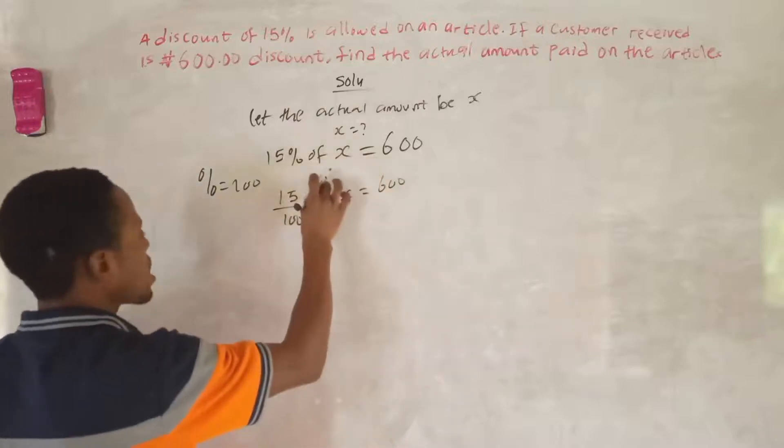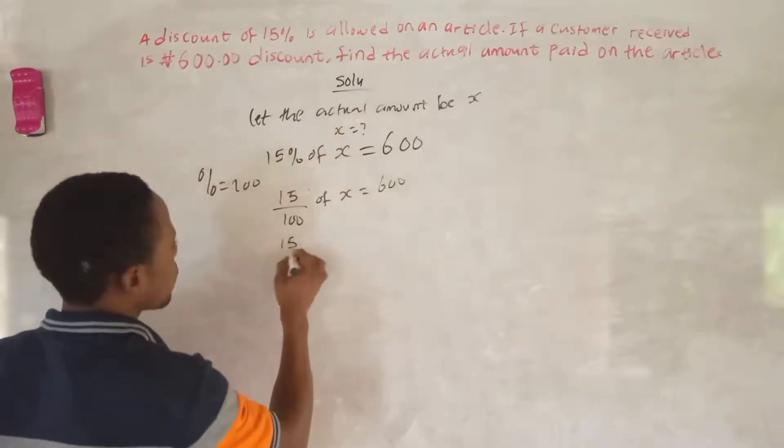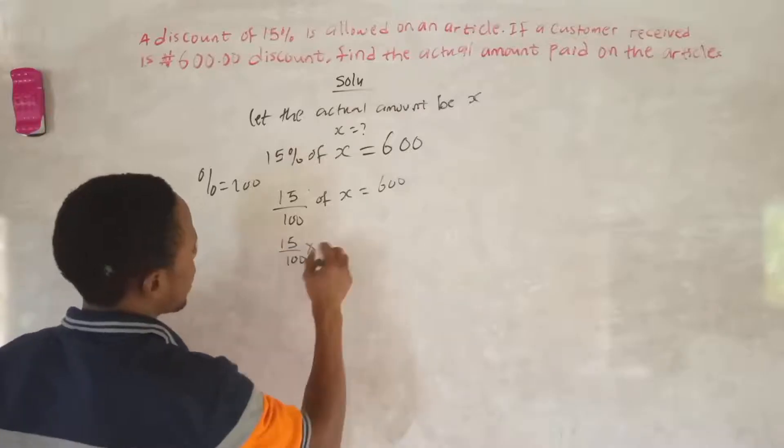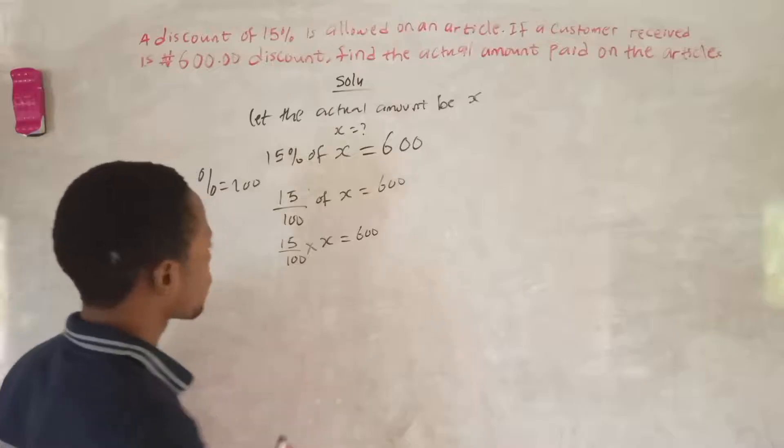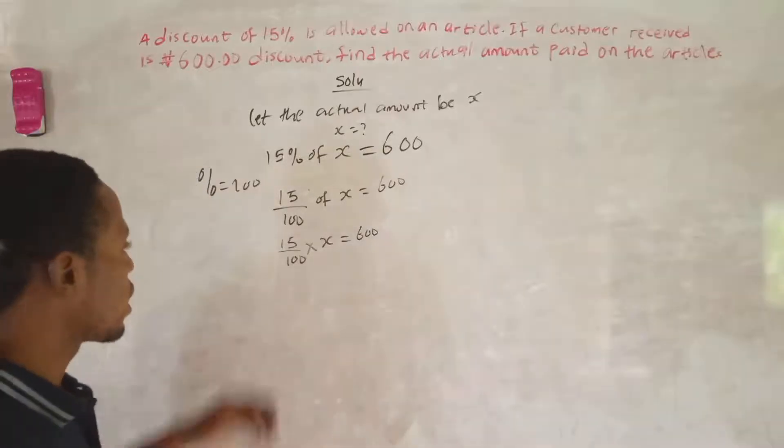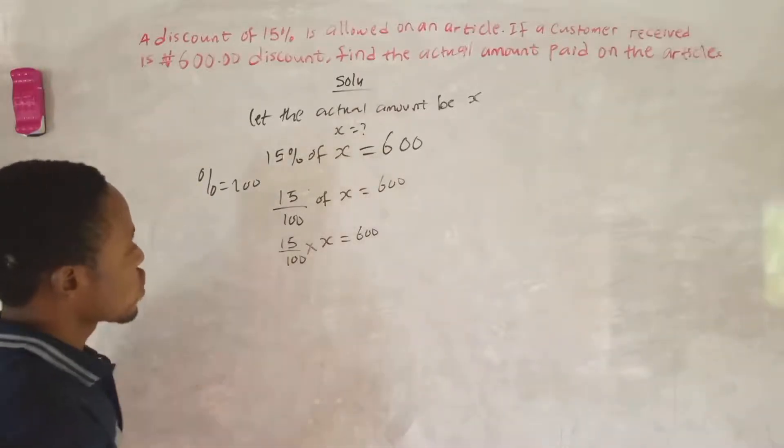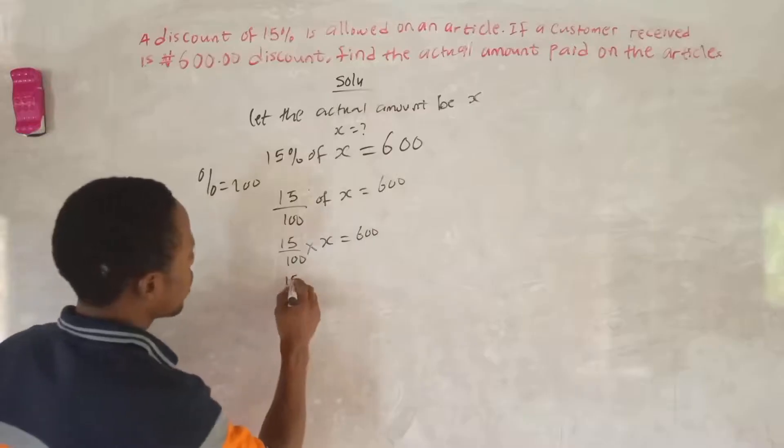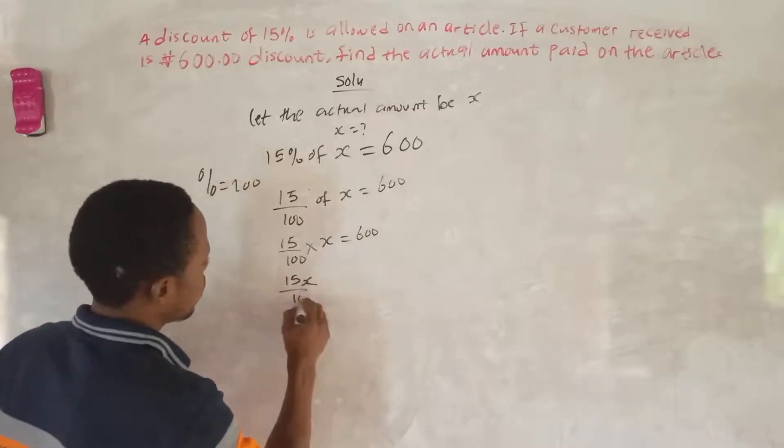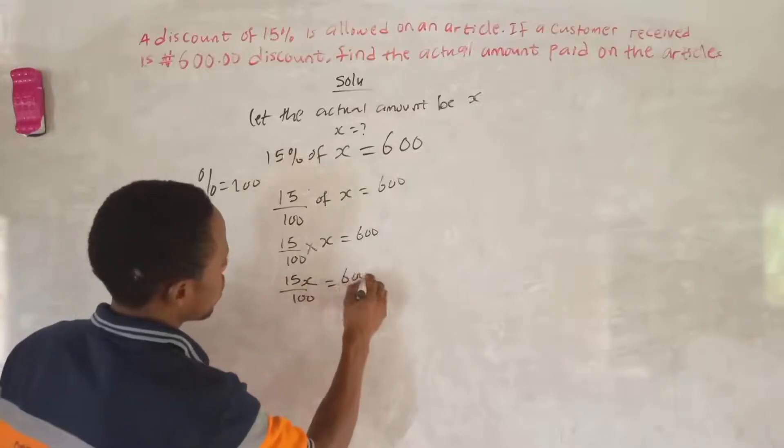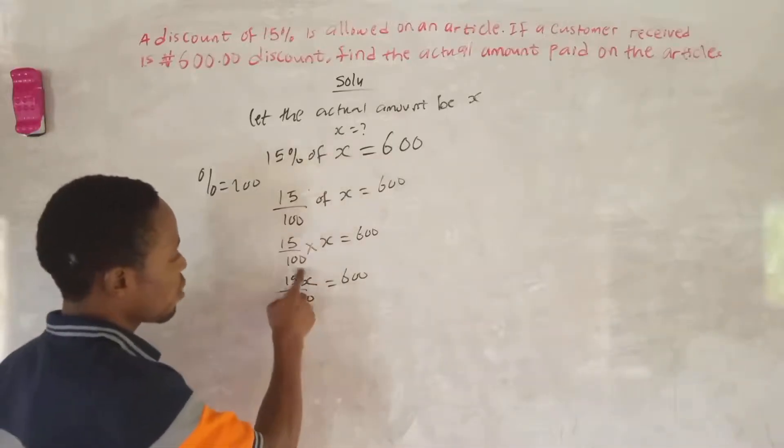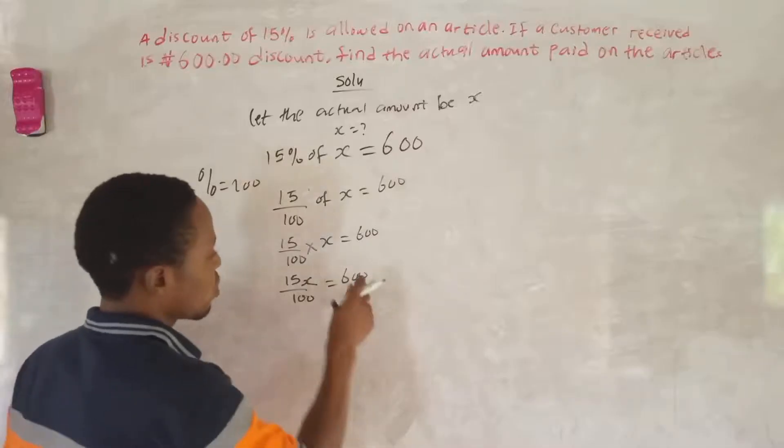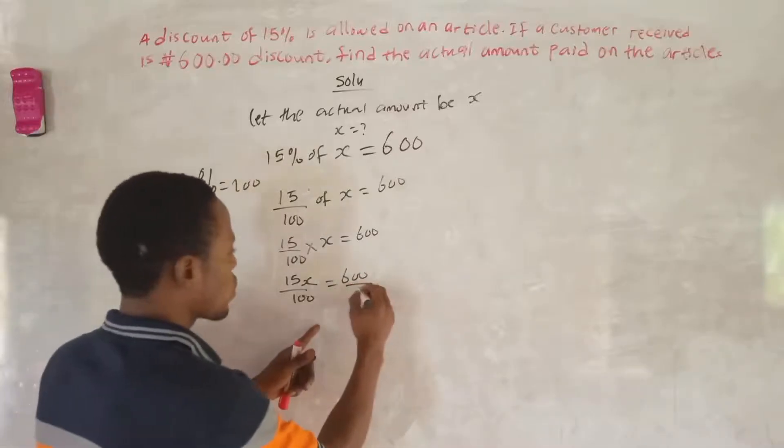So this 'of' means multiplication. So here 15 over 100 multiplied by S is equal to 600. So in this case now, we multiply this by this, so here we have 15S over 100 equals 600. So we want to make S the subject of the formula.